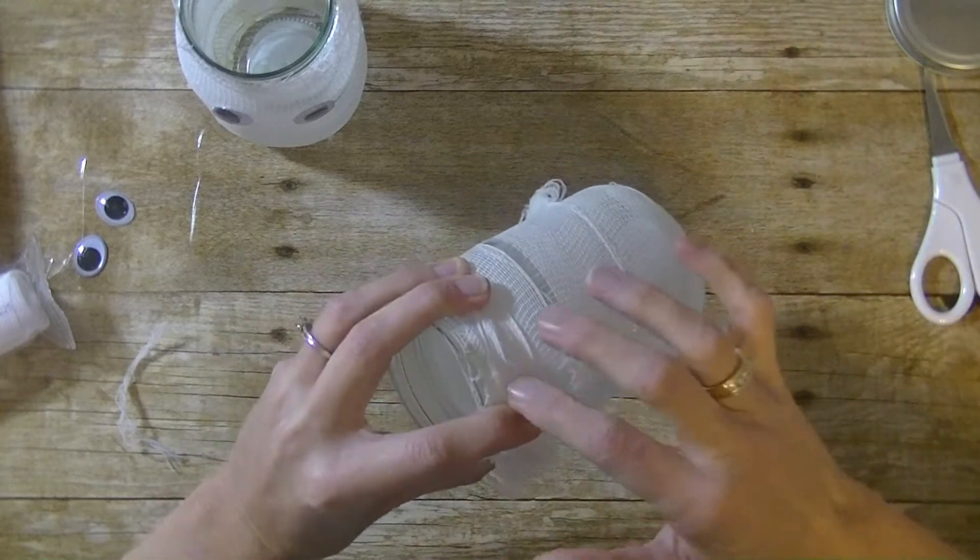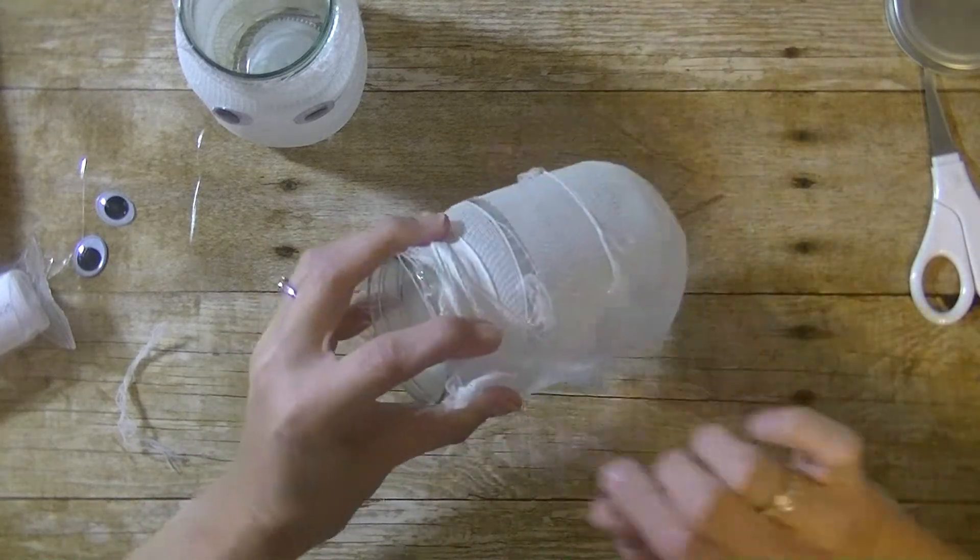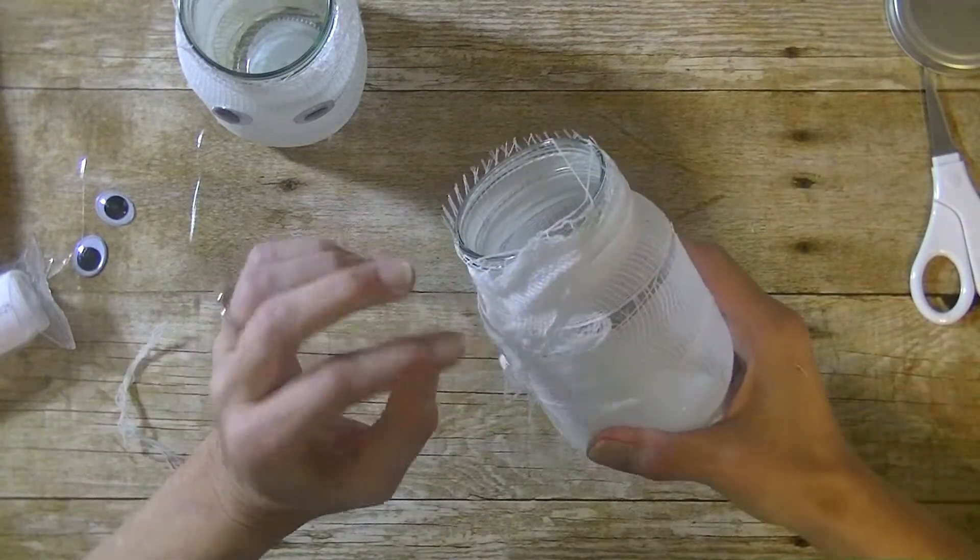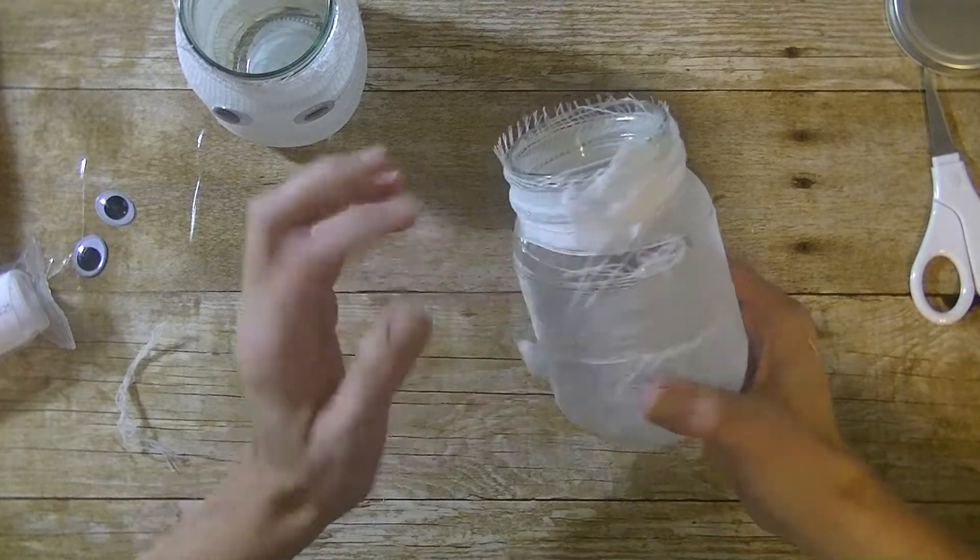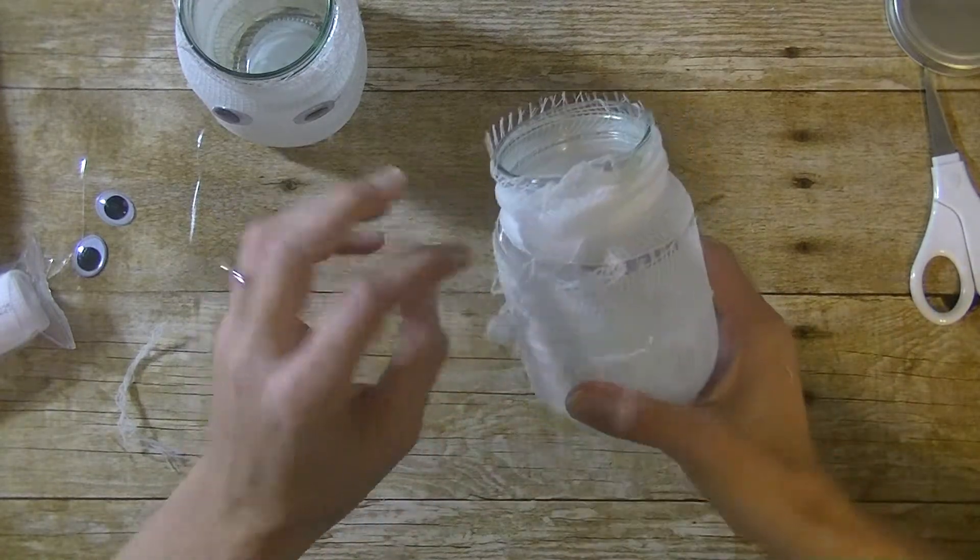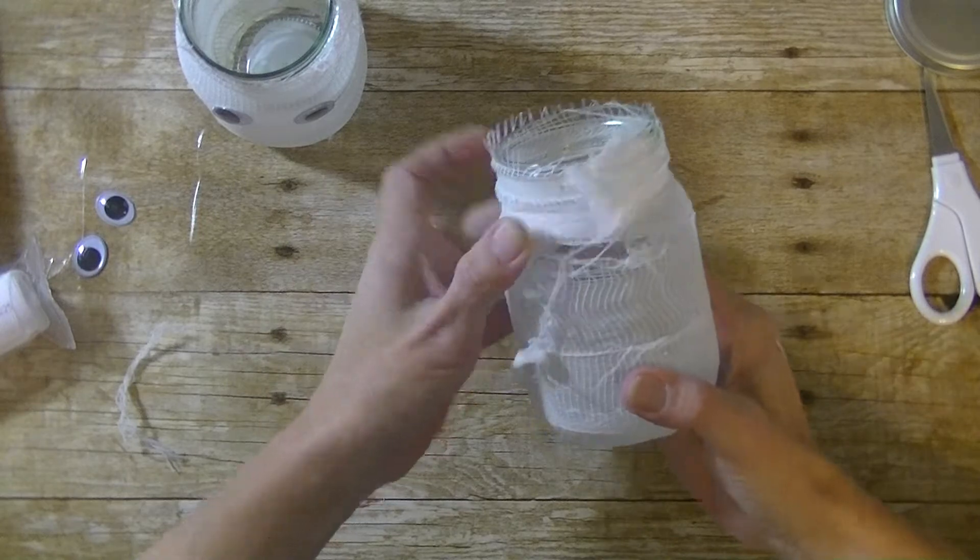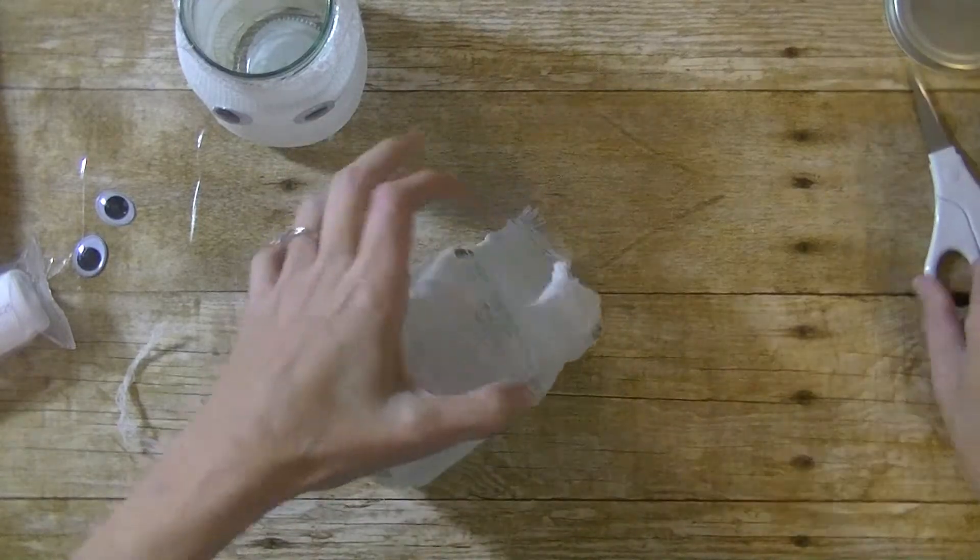And when that dries we're going to cut this piece, the hangy piece. You could also leave it on there. I think it adds character to it. You can just fold it down. The gauze kind of sticks to itself. And this is the part where my label was. I want that to be in the back.